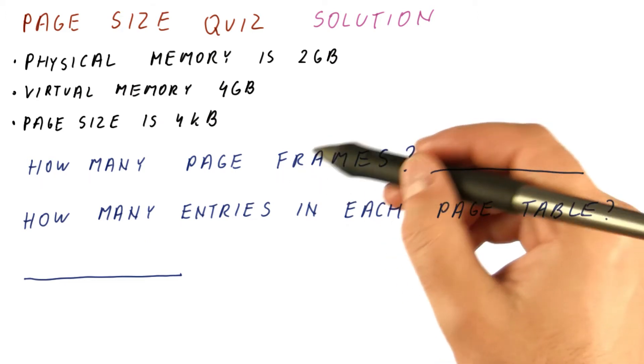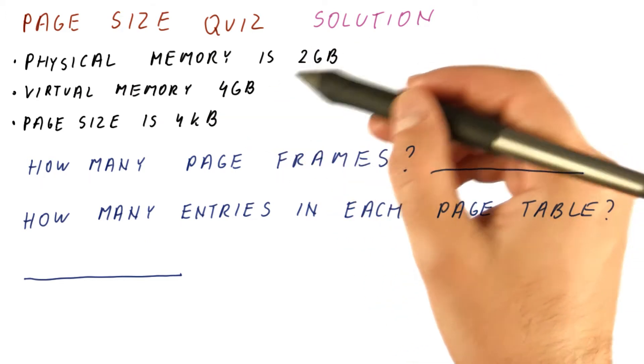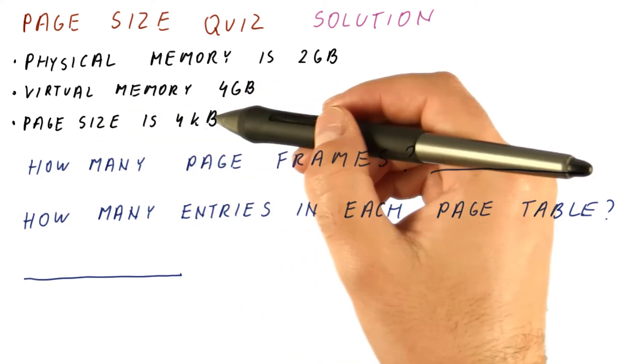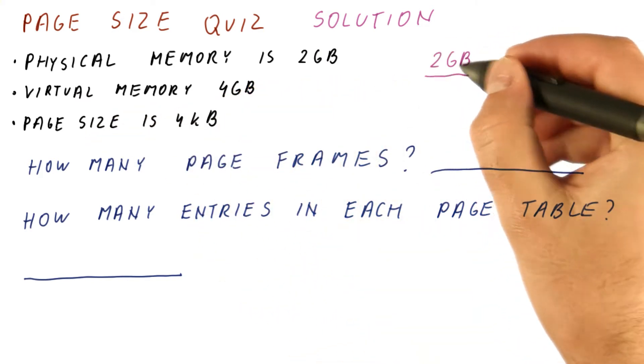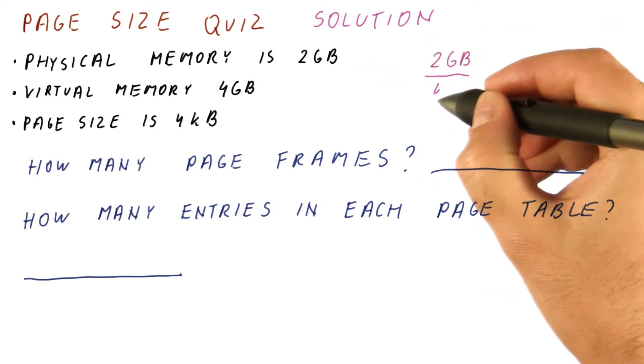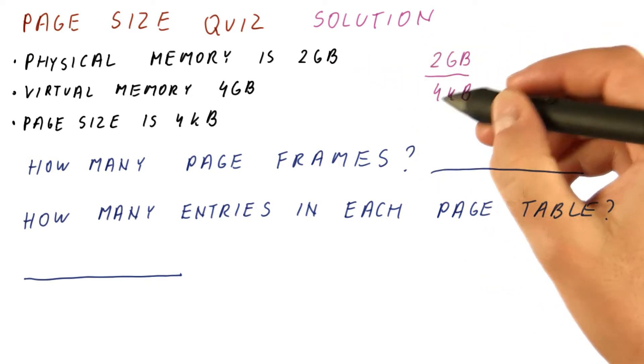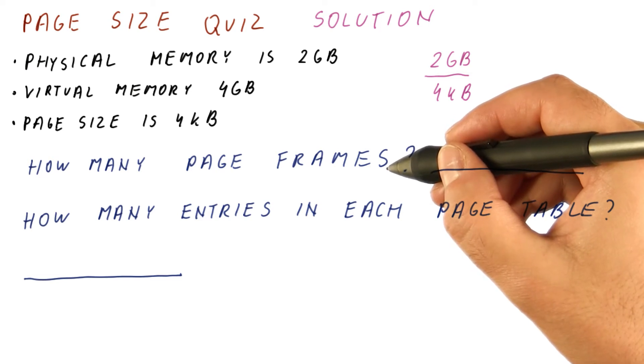Well, a page frame is a place in physical memory where a page might fit. So the number of frames is simply two gigabytes, the physical memory size, divided by the page size. The frame is the same size as a page, because it's basically a place for a page to be in.